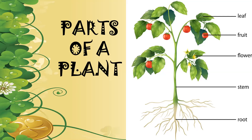The shoot system has four parts: one is leaves, one is fruit, another is flowers, and another is stem. So there are four parts in the shoot system — namely leaf, fruit, flower, and stem. The root system consists only of the root.